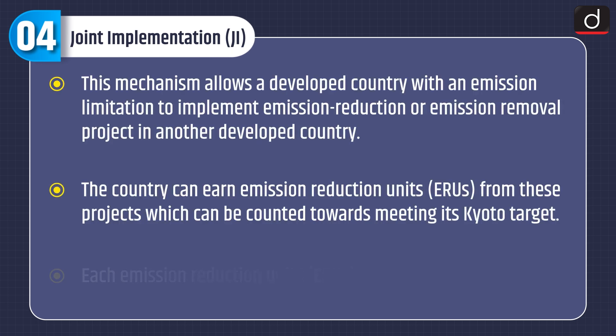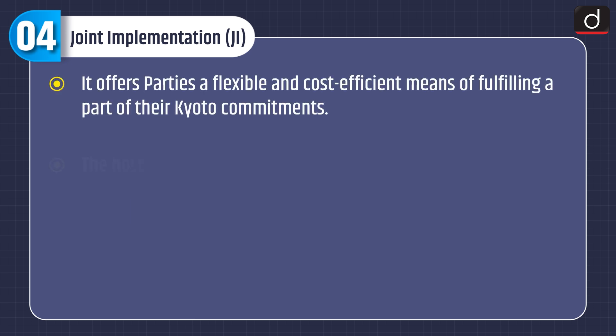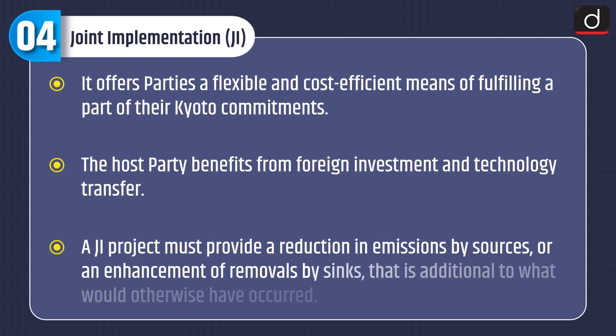Joint Implementation, or JI, is a mechanism that allows a developed country with an emission limitation to implement an emission reduction or removal project in another developed country. The country can earn Emission Reduction Units, or ERUs, from these projects, which can be counted towards meeting its Kyoto target. Each ERU is equivalent to one ton of CO₂. JI offers parties a flexible and cost-efficient means of fulfilling part of their Kyoto commitments.